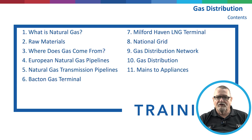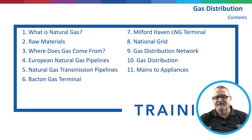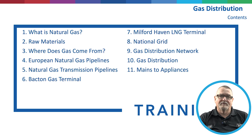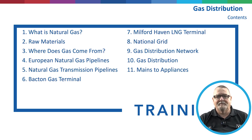What we're going to be covering is: what is natural gas, the raw materials, where does gas come from, the European gas pipeline, natural gas transmission pipelines, the Bacton gas terminal, the Milford Haven liquid natural gas terminal, the national grid, gas distribution network, gas distribution, and then mains to appliances — how does the gas get from the pipeline into the boilers, the fires, the cookers, and things like that?